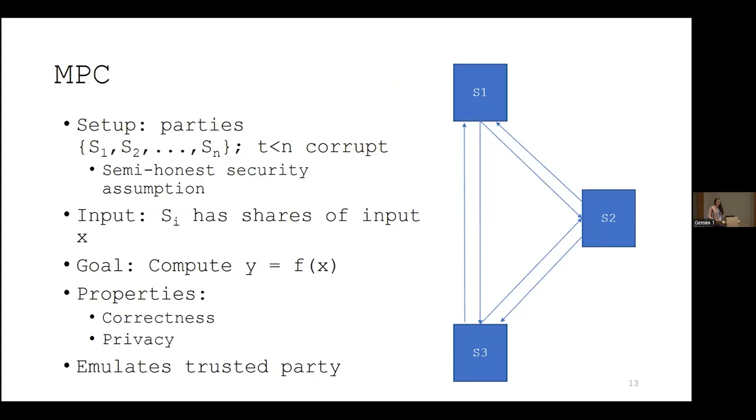A little bit more formally, we can allow the individuals to split their private input values into smaller pieces or secret shares and distribute those among these servers where the individual secret shares reveal nothing about the secret value. We assume that up to T of these servers could be corrupted by some adversary, and in this scenario specifically we're working with an honest majority, so we assume that T needs to be less than half the servers. We also operate with semi-honest security, which means we assume that the servers follow the protocol specification. MPC then allows us to compute a function, in this case the mechanism, guaranteeing two properties, correctness and privacy, where correctness means we're computing the correct function output and privacy means that nothing beyond the function output is revealed.